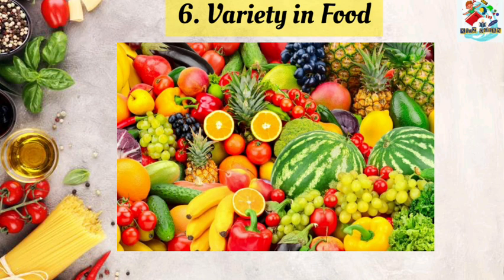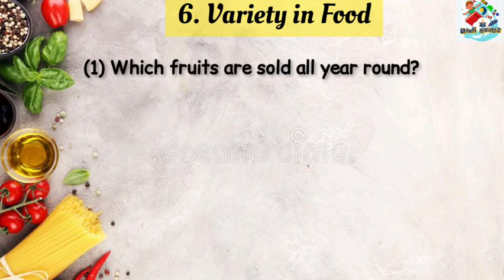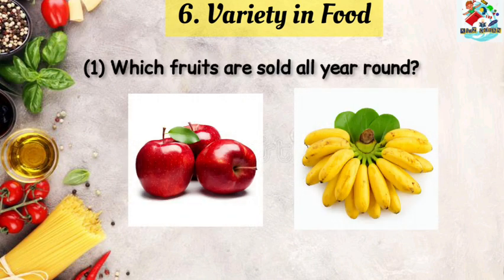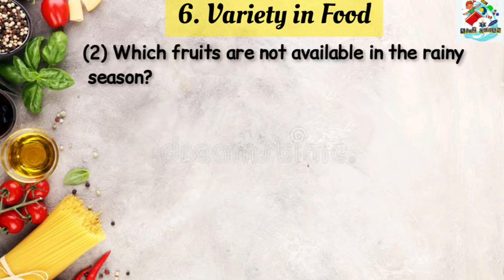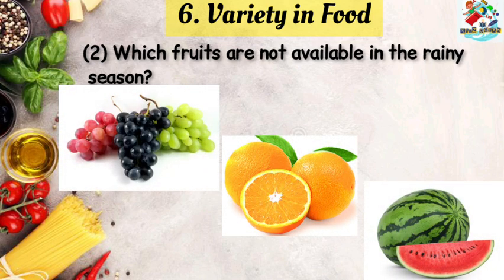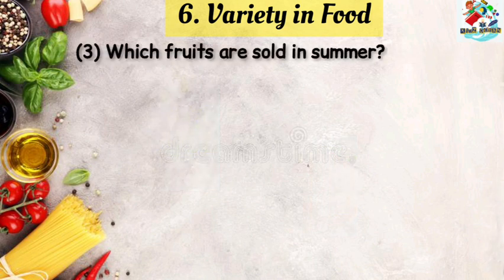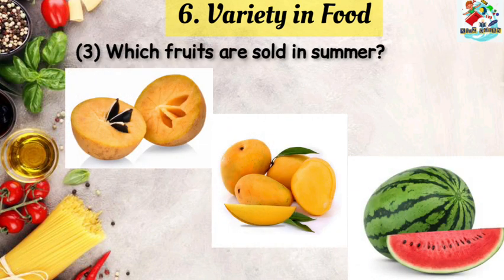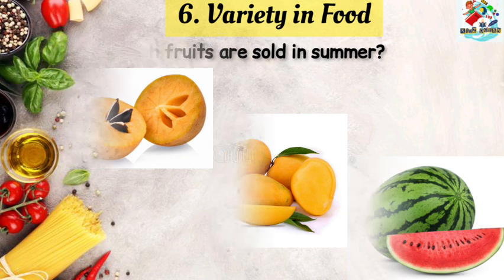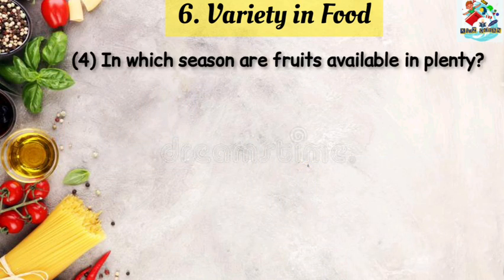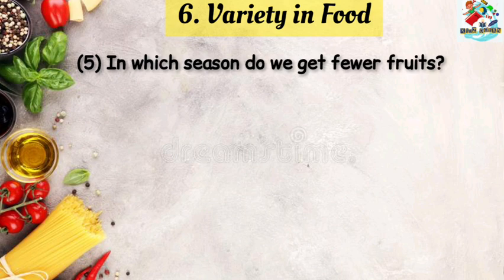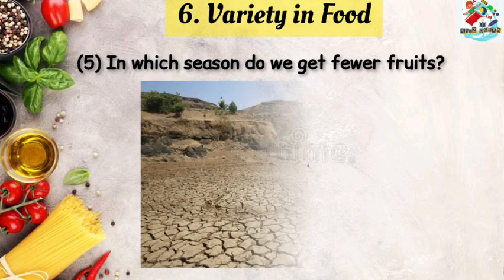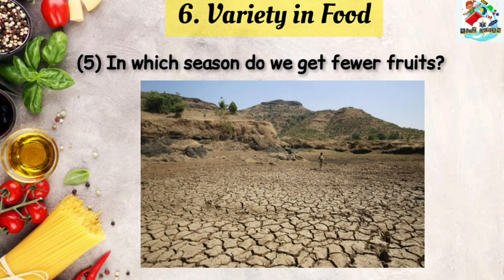Which fruits are sold all year round? The answer is apples and bananas. Which fruits are not available in the rainy season? Grapes, oranges, watermelons and so on. Which fruits are sold in summer? Chickoo, mango and watermelons. In which season are fruits available in plenty? The answer is winter season. In which season do we get fewer fruits? That is summer season.